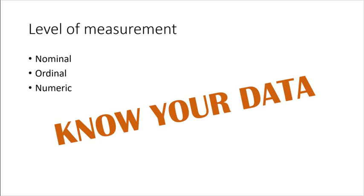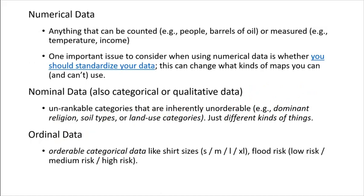Levels of measurement. The idea, the differences between nominal, ordinal, and numeric data. Numeric data, obviously anything that can be counted like people or barrels of oil or measured like temperature or income. So you do need to think when you're using numeric data whether or not you should be normalizing or standardizing your data because it does affect what kind of map you can make.